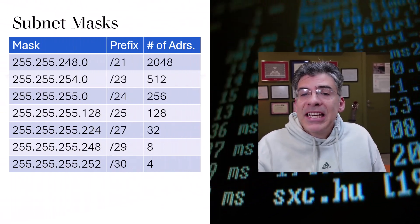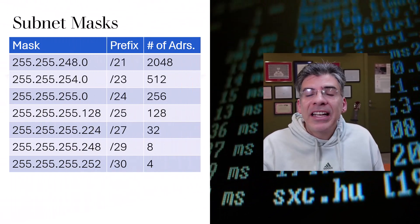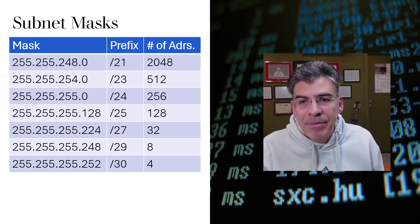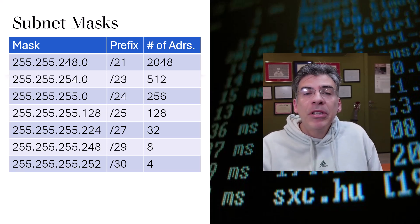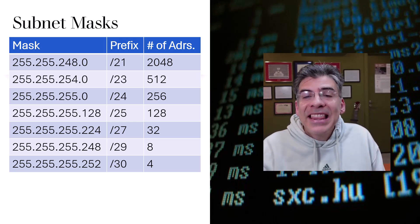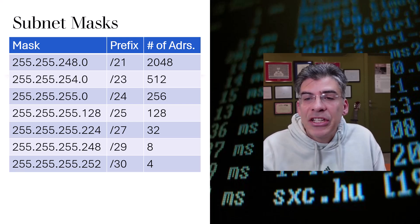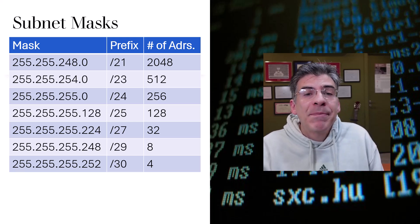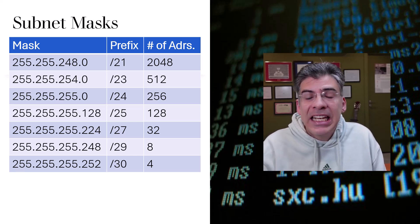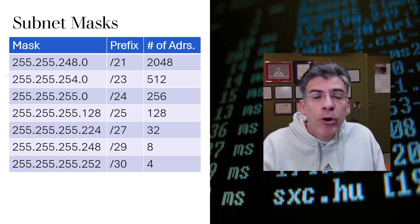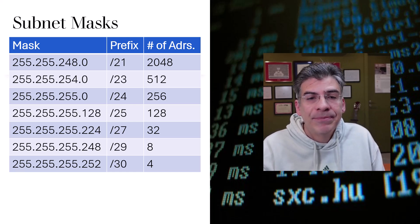The subnet mask is used to define the range of addresses that exist within a subnet. Here you can see a table of various subnet masks and the sizes of subnets that each can create. By examining how many hosts you expect to have within each network segment, you can choose the appropriate subnet size.